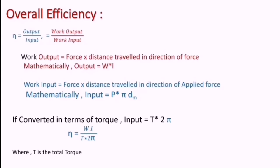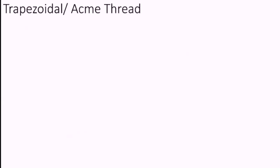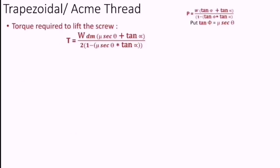Till now we have derived all the relations such as efficiency, torque required to lift the screw, and torque required to lower the screw for square threaded screws. Now let us look at the expressions if the screws are of trapezoidal or acme type. While deriving the relation, we had the expression P equals W times (tan φ plus tan α) divided by (1 minus tan φ times tan α). For a trapezoidal or acme thread, we substitute tan φ as µ sec θ. The torque required to lift the screw for a trapezoidal or acme thread is: T equals W × dm × (µ sec θ plus tan α) divided by 2 × (1 minus µ sec θ times tan α).